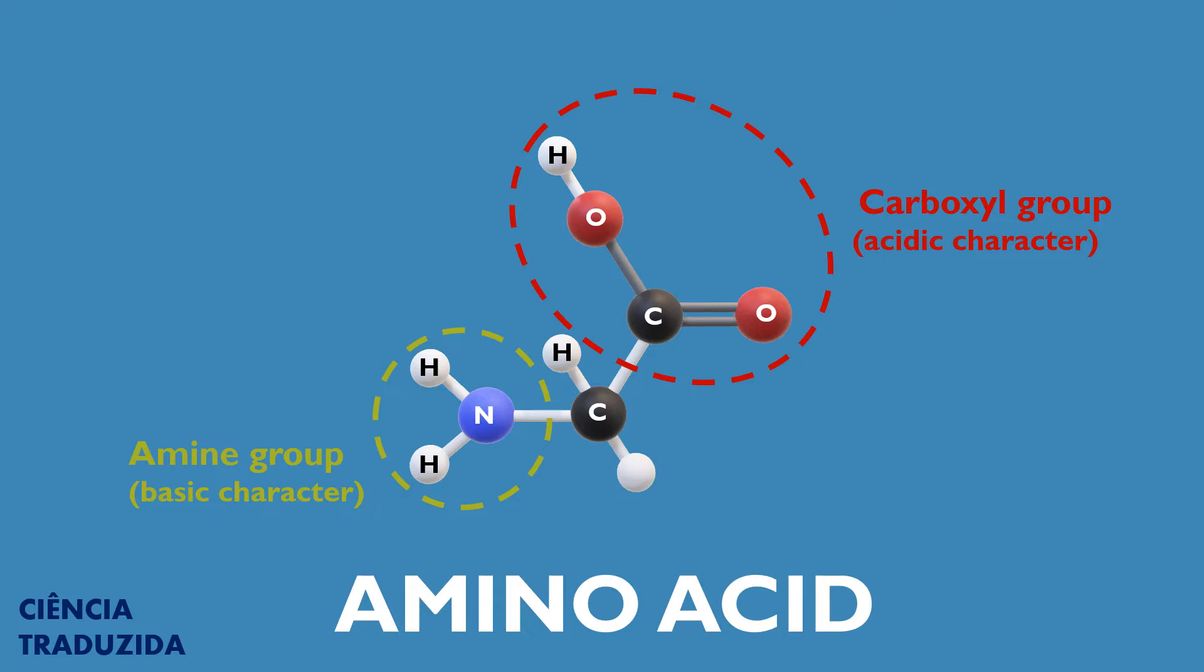In addition, they must have at least two carbons in their structure and may have different radical groups attached to the alpha carbon, which is the one that attaches to the functional groups. Radical groups, also known as side chains, are what differentiate amino acids. There are 20 types of radicals that combine to the alpha carbon of an amino acid. So there are 20 types of amino acids.